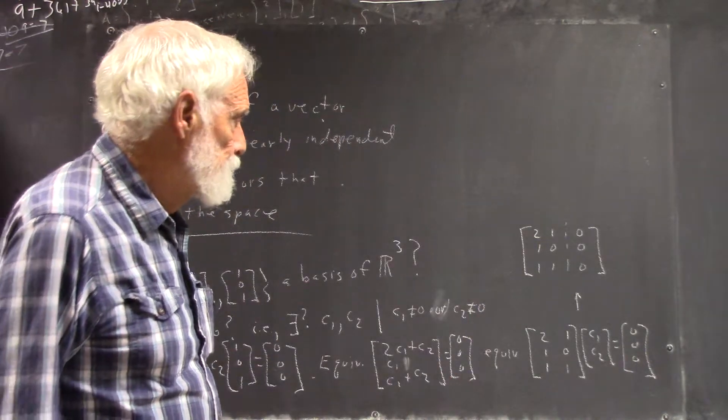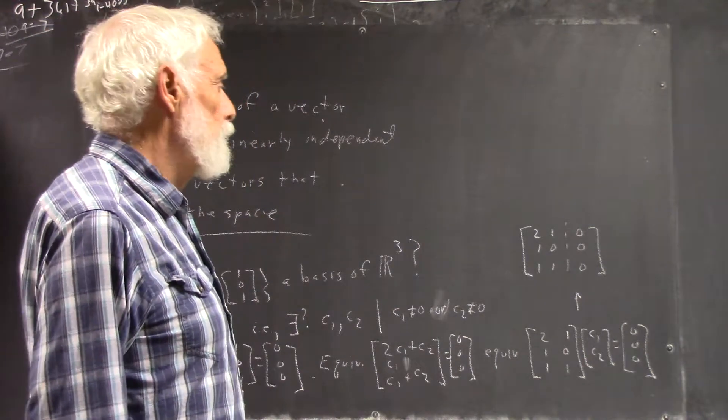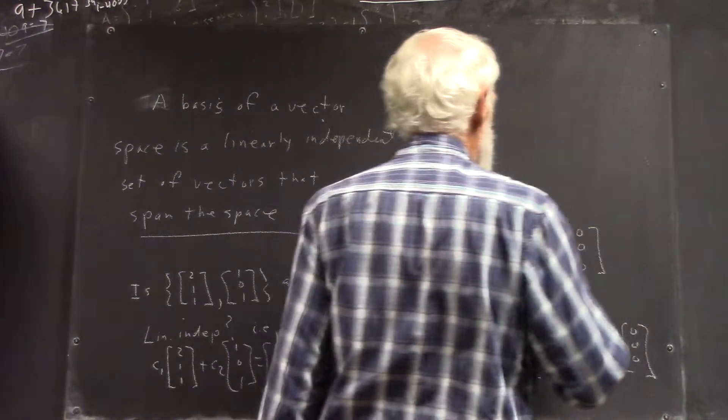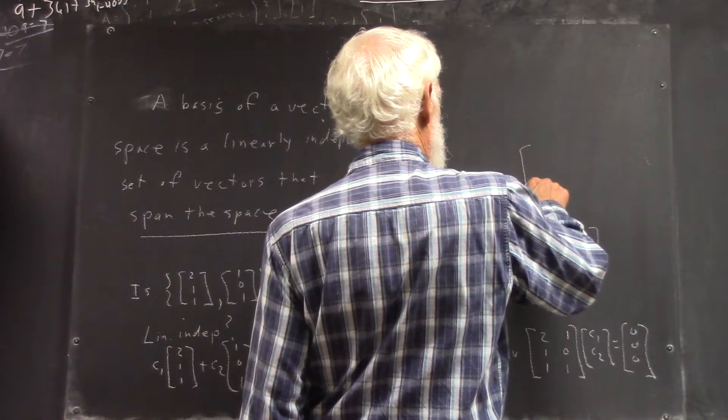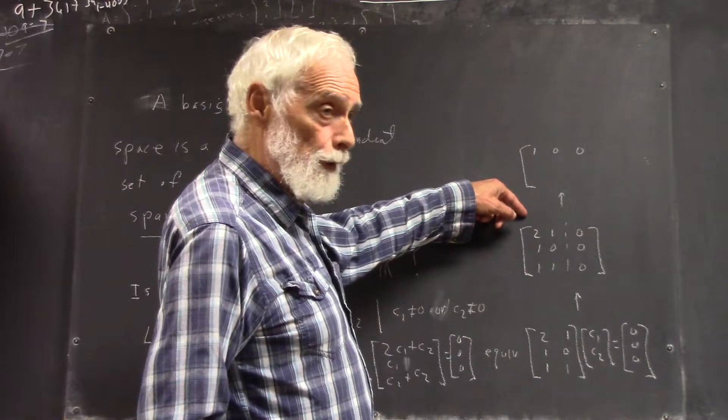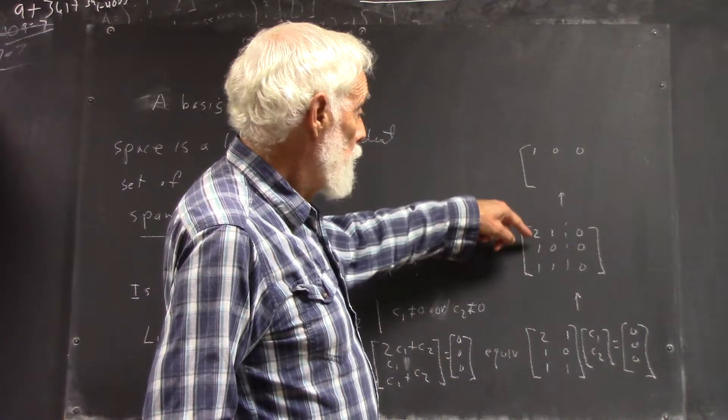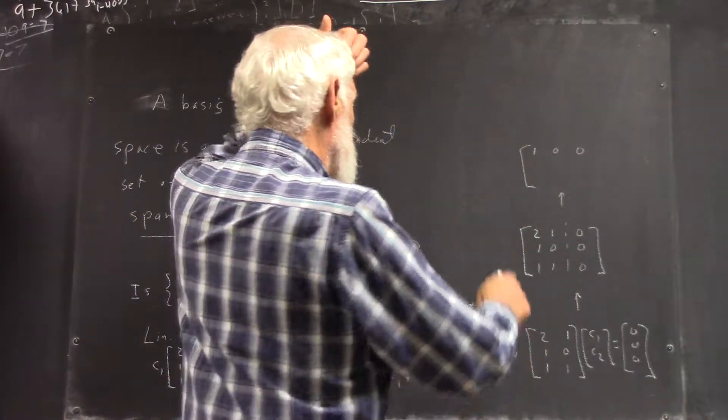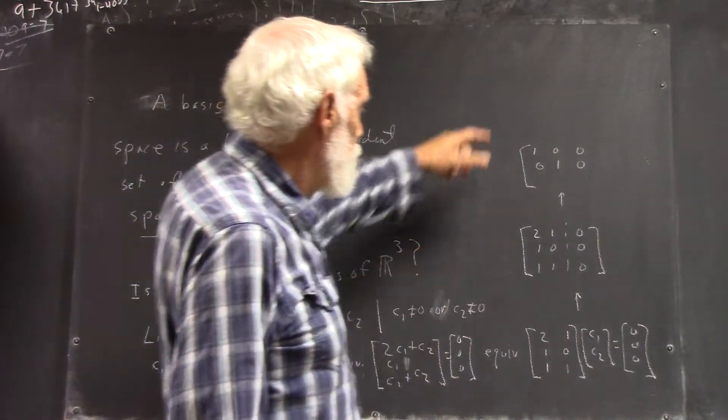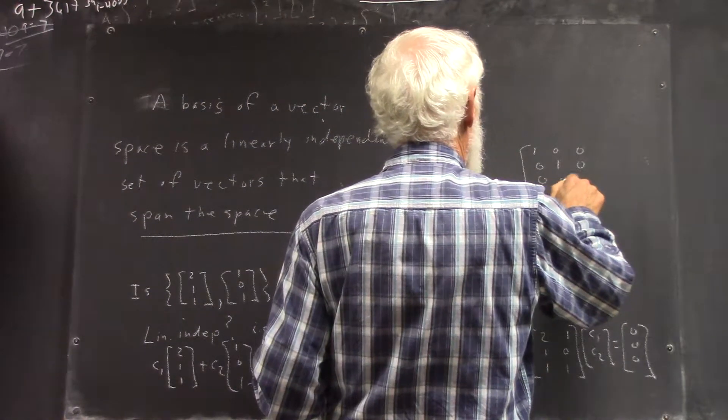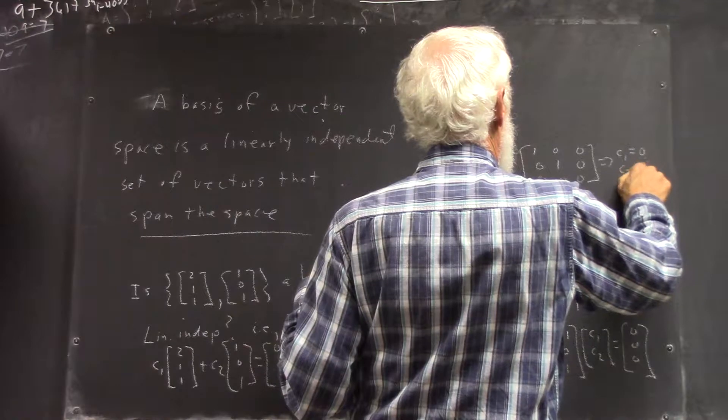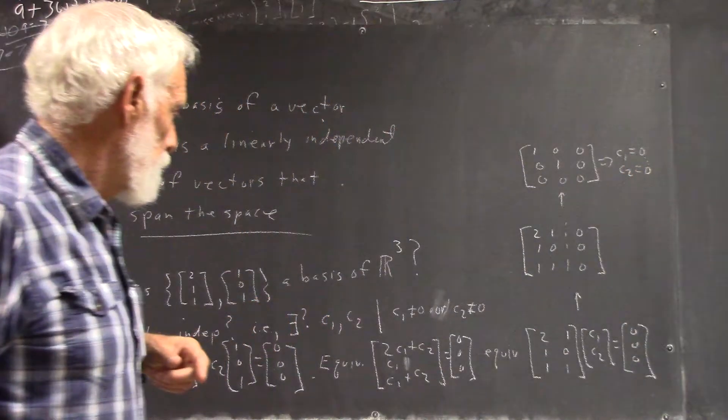And if you reduce this matrix, you get 1, 0, 0 just by putting this on there, right? And then you can get 0, 1, 0. And once you've got that, you're going to get 0, 0, 0. And you get that.